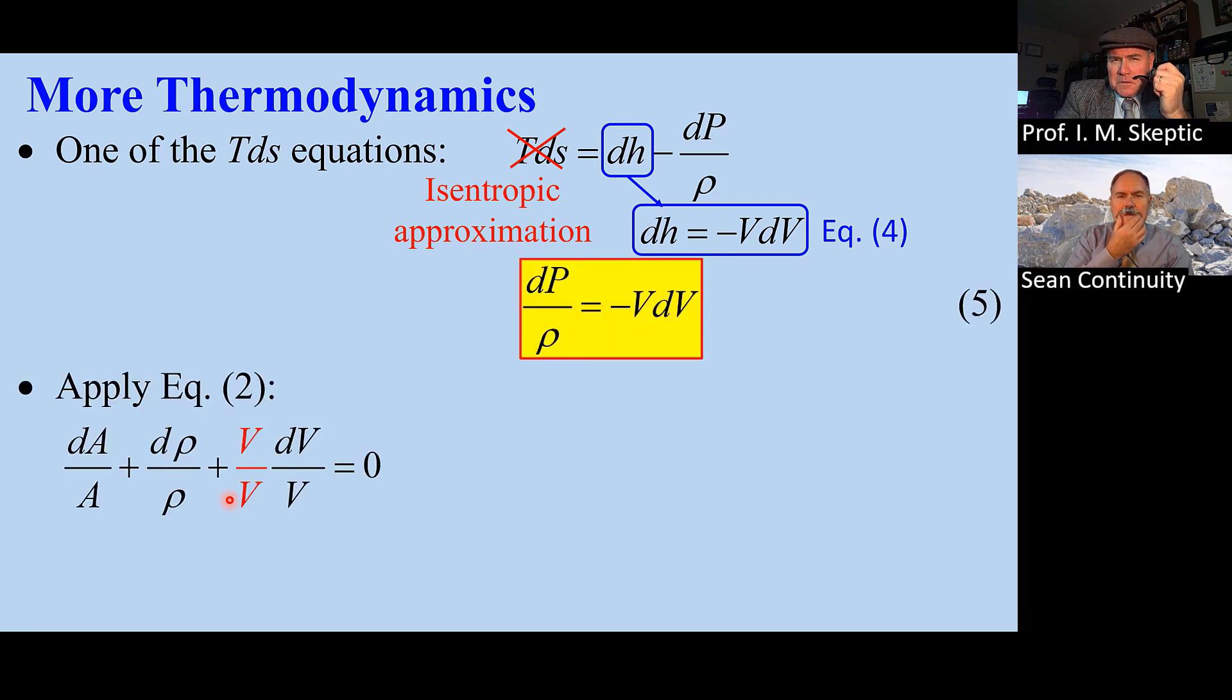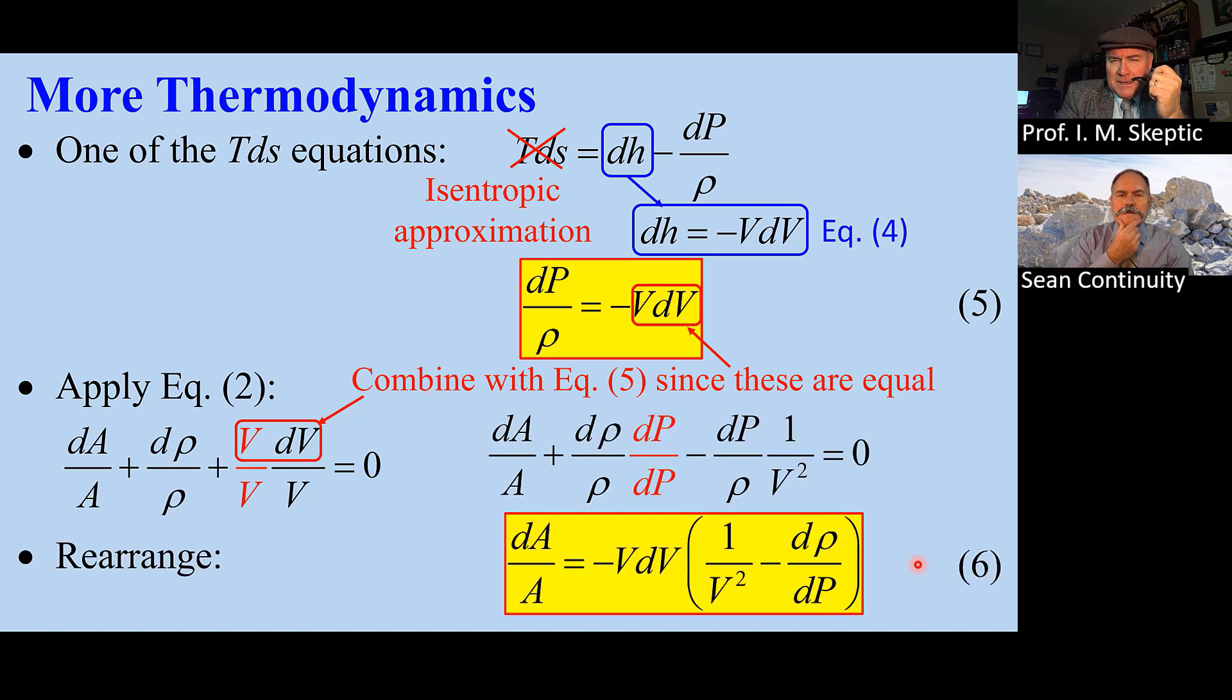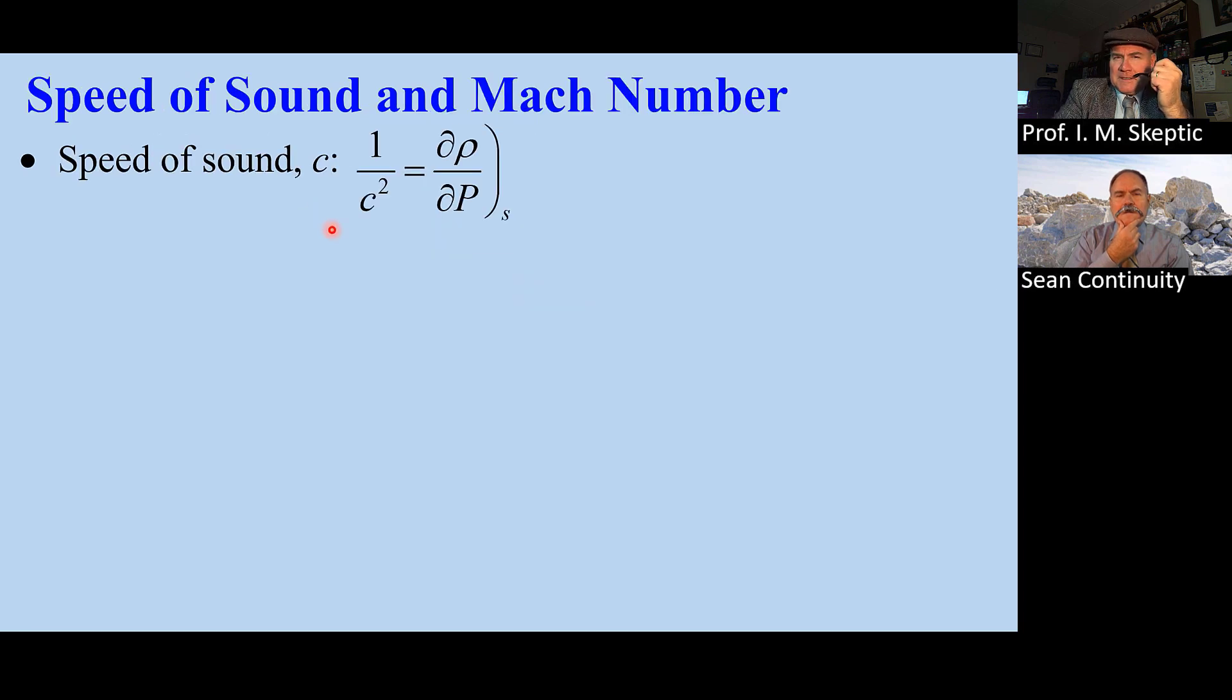Now we apply equation 2. Notice these two are the same, so we write it this way. Then we get equation 6: dA/A is negative VdV, then 1 minus V squared, minus dρ/dP. Speed of sound C is defined as this. Here's our equation 6.